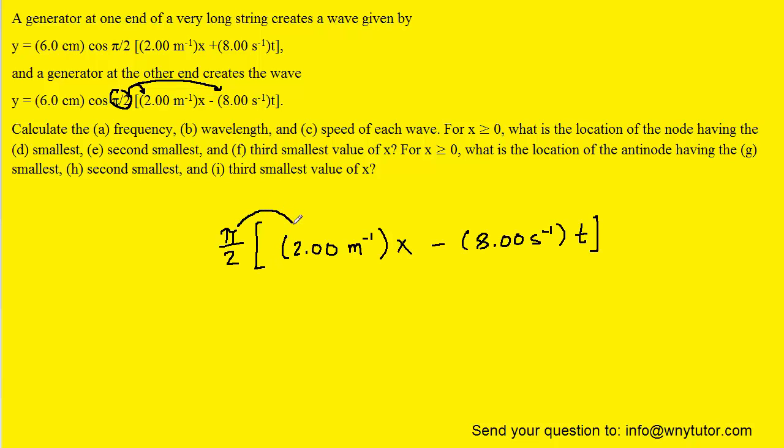So when we multiply the π/2 by 2, we should just get π. And then when we multiply the π/2 by 8, we should end up with 4π.